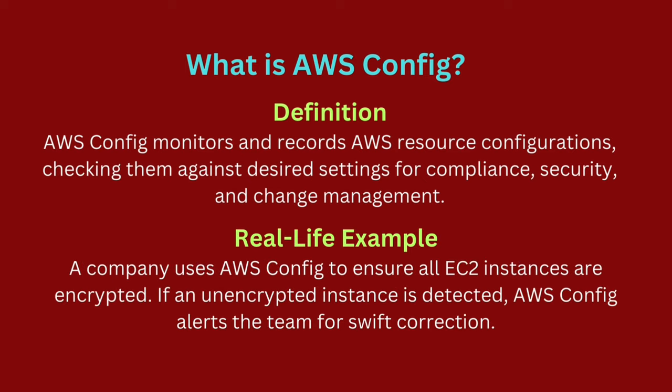For instance, a company uses AWS Config to ensure all its Amazon EC2 instances are encrypted using approved AWS KMS keys. If a new instance is launched without encryption or with an unauthorized key, AWS Config immediately detects this.